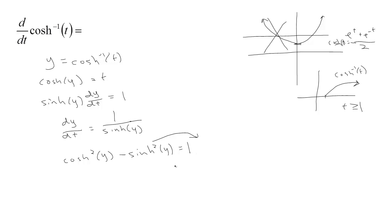So, if we start solving for sinh, I'm going to add sinh²(y) to both sides and subtract 1 from both sides. That will give me sinh²(y) alone on one side and cosh²(y) minus 1 over on the other side.